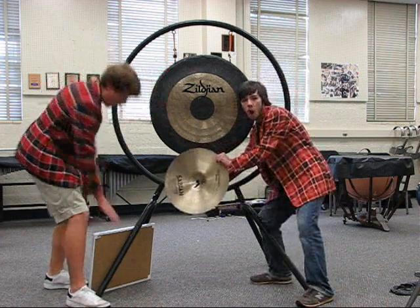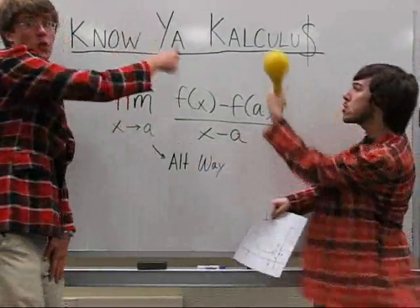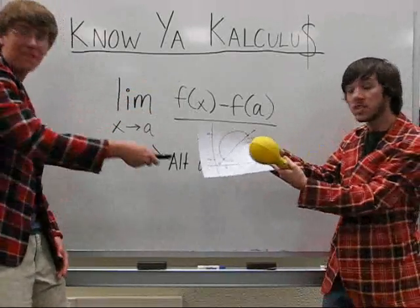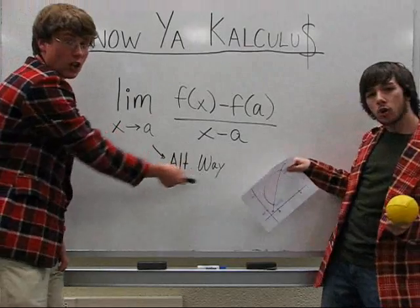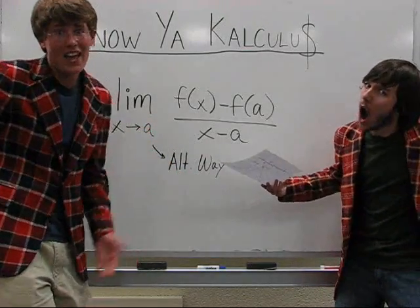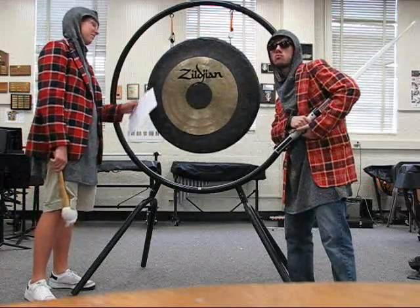Clear your desk, ready for the test, gotta know your calculus. Tonight, let's derive, find slope above the C can lie. Limit as X approaches A is an alternative way, F of X minus F of A over X minus A. DANG DANG! That's crazy.